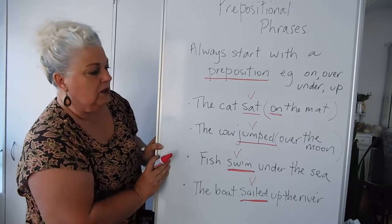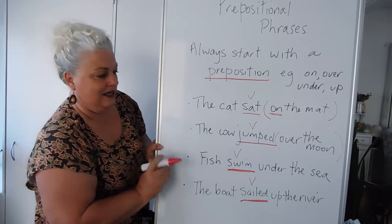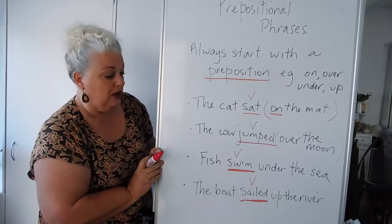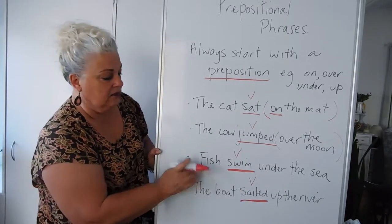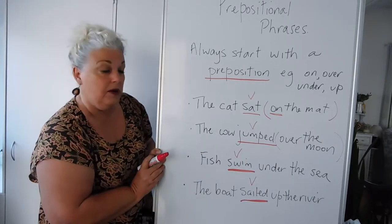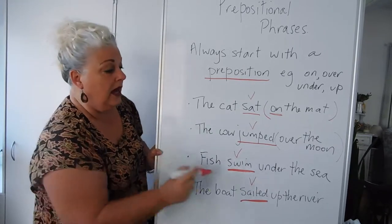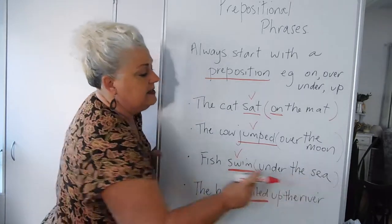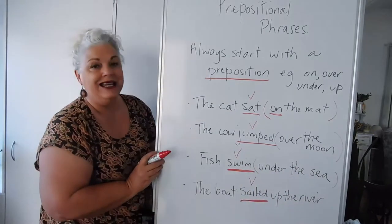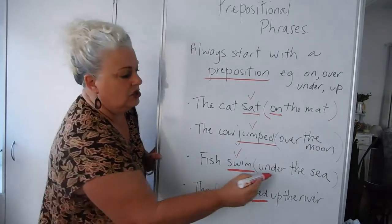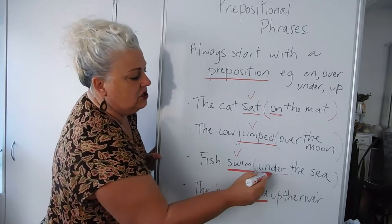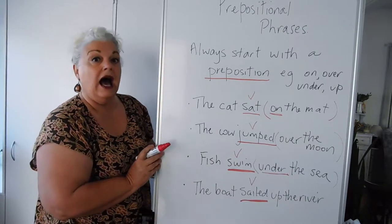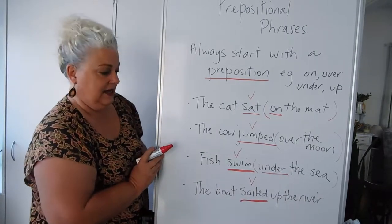Fish swim under the sea. It is a simple sentence with a verb, swim. It has a subject, fish swim. And it has a prepositional phrase, under the sea, showing the position of that swimming. Where did it take place? Under the sea.